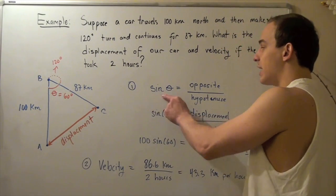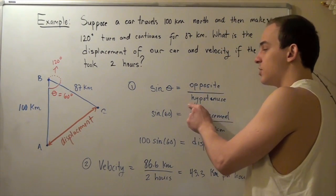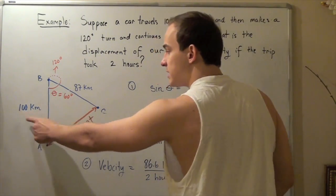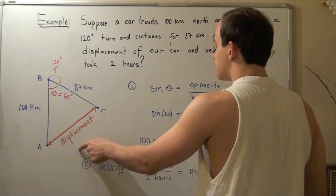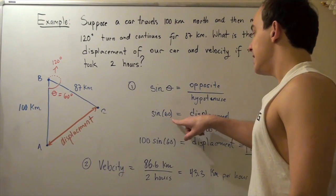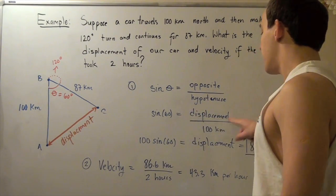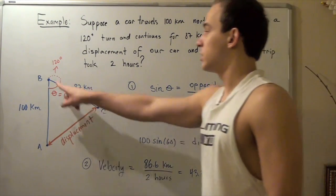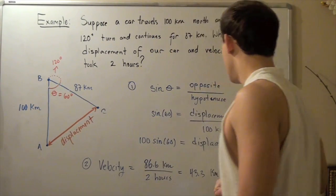Once again, sine equals opposite over hypotenuse. Since we know this and we know this, we can now find our displacement. Sine 60 equals displacement divided by 100 kilometers, our distance from point A to point B in this triangle.